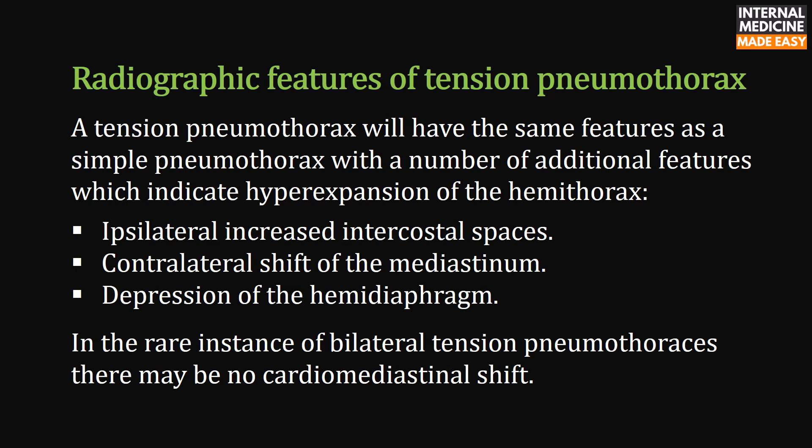Additional radiographic features of tension pneumothorax include: ipsilateral increased intercostal spaces, contralateral shift of the mediastinum, and depression of the hemidiaphragm. In the rare instance of bilateral tension pneumothorax, there may be no cardiomediastinal shift.